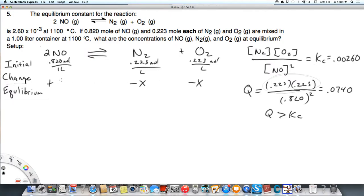My coefficient is 2X. So that's how we know what's going to be negative and what's going to be positive when we're given amounts other than zero for our products and reactants. So then at equilibrium, what we're going to have is 0.820 plus 2X, and then each of these are going to be 0.223 minus X for both of those.